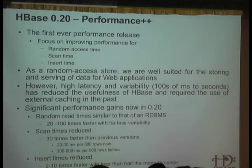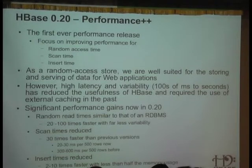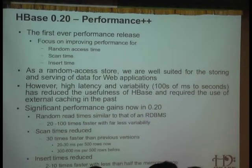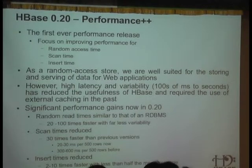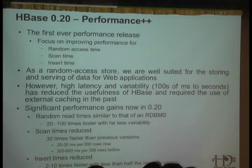Before this release, in prior releases like 0.19, HBase had good random access times sometimes, but unfortunately high latency and variability in other cases. Now that has changed, with very significant performance gains due to the re-architecture for this release. Our random read times are similar to MySQL — about 20 to 100 times faster than our previous releases, with far less variability. In general, we achieve an order of magnitude better performance for most operations.